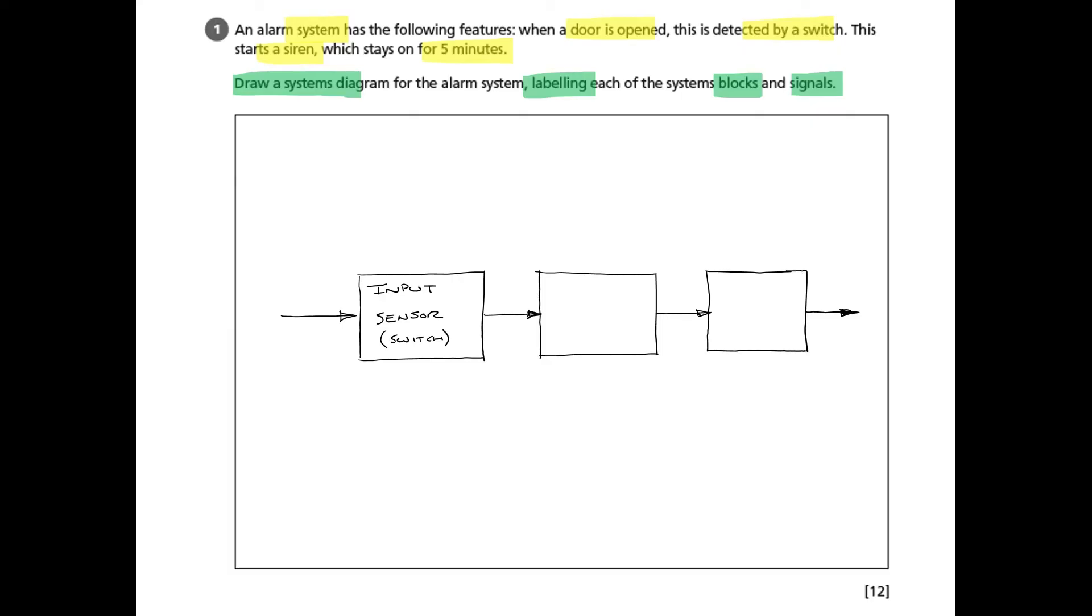We know that the input in the case as described in the question is a switch, and in effect that is acting as a sensor. So the first block is represented by the input always, and in this particular case it has a sensor which is a switch in it.